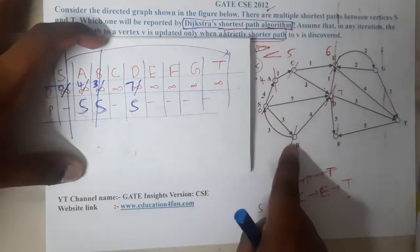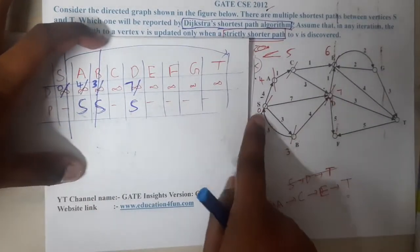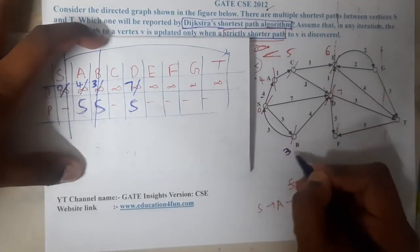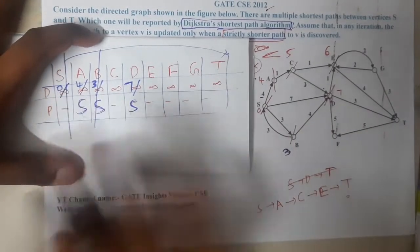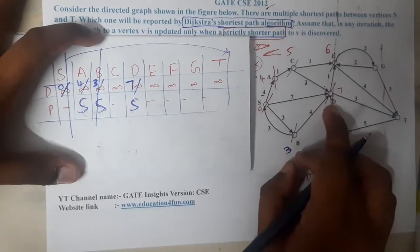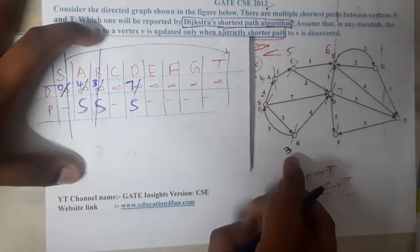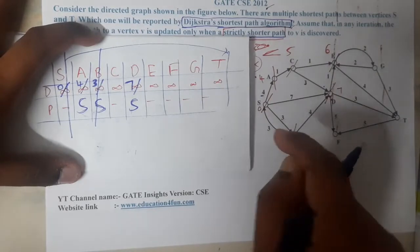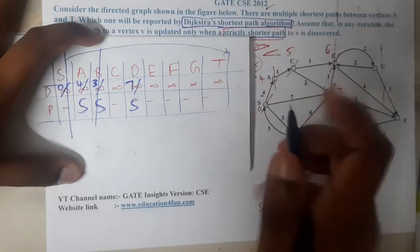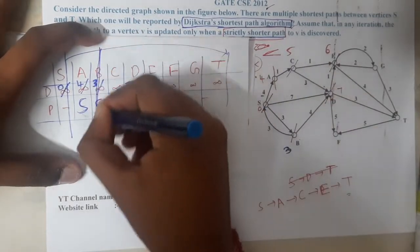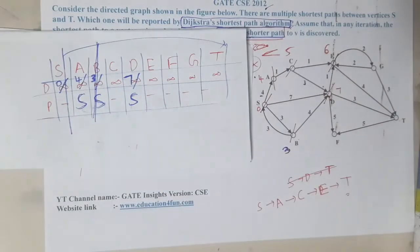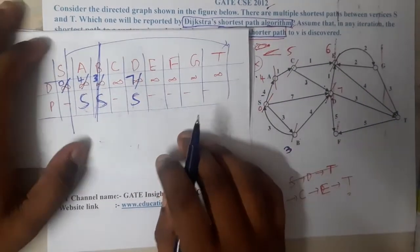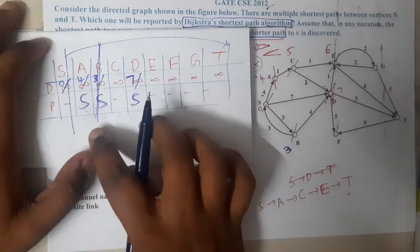Node s is done. The minimum unvisited node is b. From b, we can go to s at cost 3+3=6, but 0 is already less so no update. To d, the cost is 3+4=7, which equals the current value of 7 — since it is not strictly less, we do not update. Node b is done with no changes.